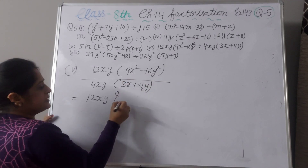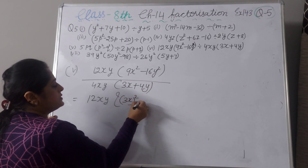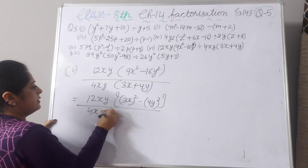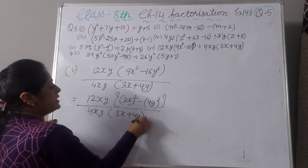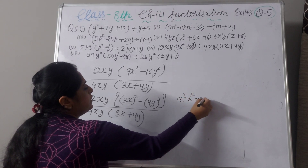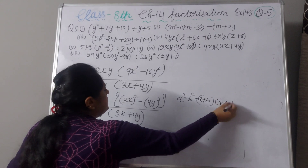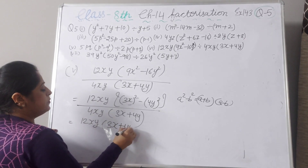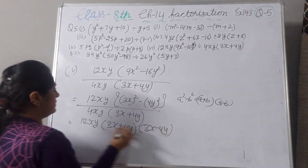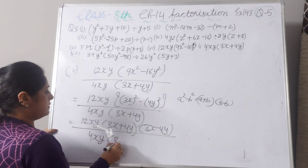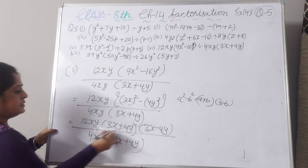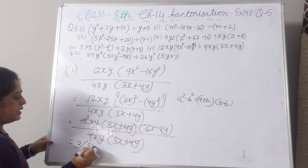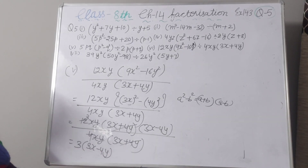Next part: 12xy(9x squared minus 16y squared) divided by 4xy(3x plus 4y). We write 9x squared as (3x)squared and 16y squared as (4y) squared. Using the same identity a squared minus b squared equals (a plus b)(a minus b), we get (3x plus 4y)(3x minus 4y). So: 12xy(3x plus 4y)(3x minus 4y) divided by 4xy(3x plus 4y). Cancel (3x plus 4y) and xy with xy. 12 divided by 4 gives 3, and your answer is 3(3x minus 4y).